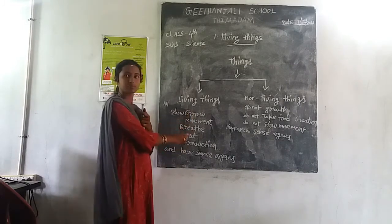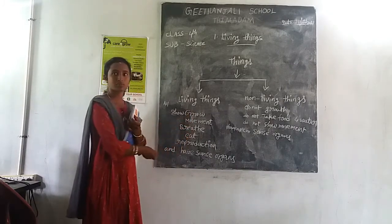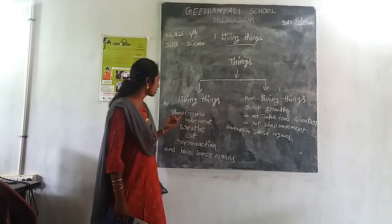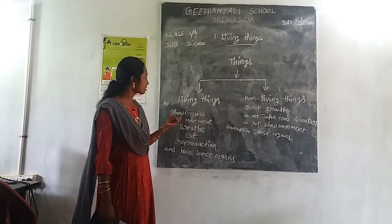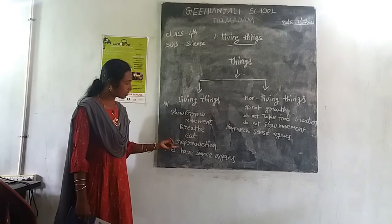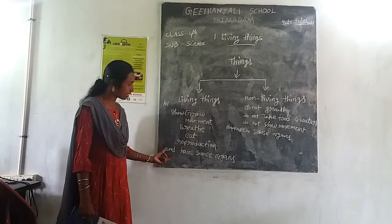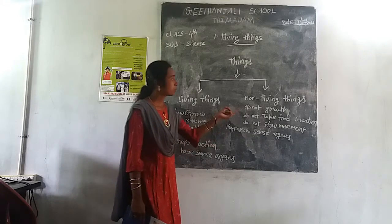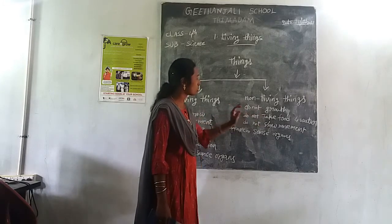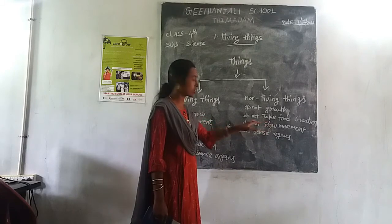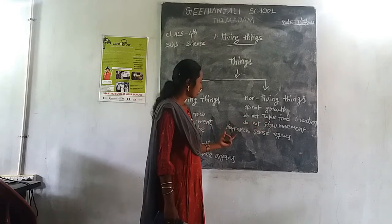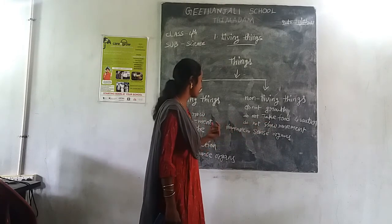Okay children. Living things and non-living things: living things show growth, movement, breathe, eat, do reproduction, and have sense organs. But non-living things do not grow, do not take food and water, do not show movement, and they have no sense organs.